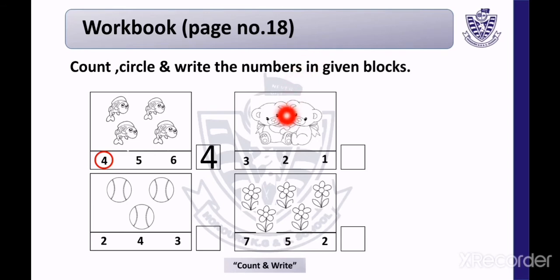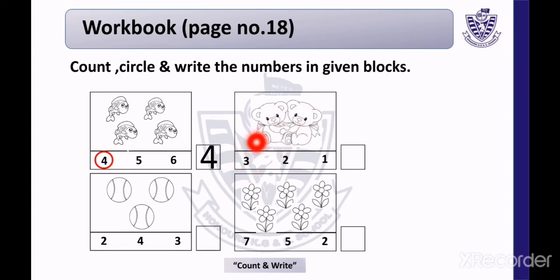Now look at the next box. This is a picture of teddy bears. Count with me — 1, 2. There are 2 teddy bears. Look at the numbers — is it number 2? Yes, it is number 2. Now circle the number 2 and write it in the given block.